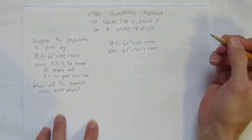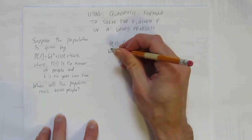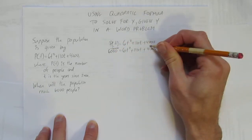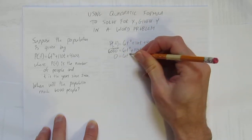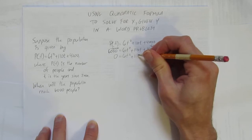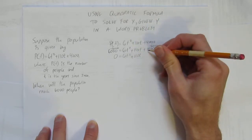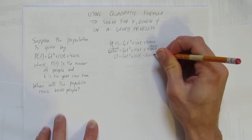Now get the equation all to one side. How do I do that? Subtract 6,000 from both sides and you get 0 equals 6t squared plus 110t plus negative 2,000.